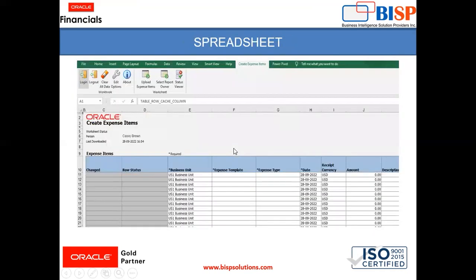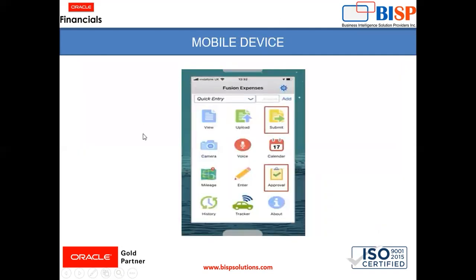The next method is spreadsheet. The spreadsheet can be downloaded from the expense work area from the settings. After downloading the spreadsheet, you can connect to your instance, fill all the details, and then upload the spreadsheet to the instance. The last method is mobile device — using the Fusion Expense mobile application you can enter expenses, handle approval submission, and more.